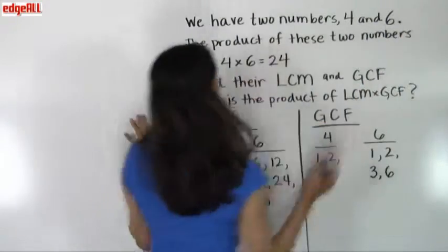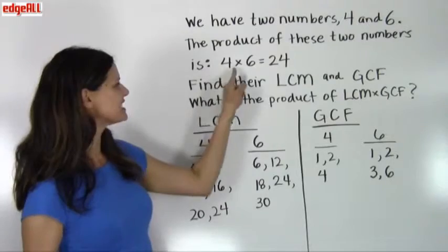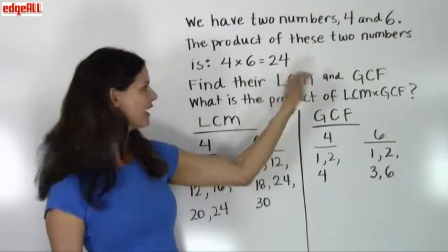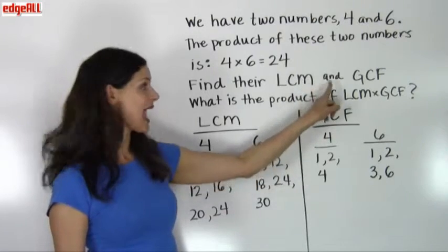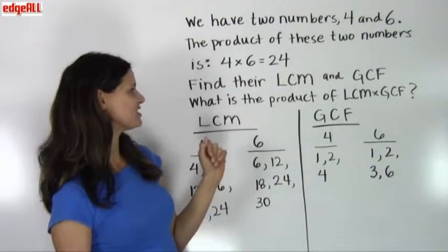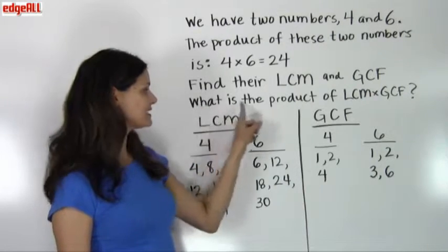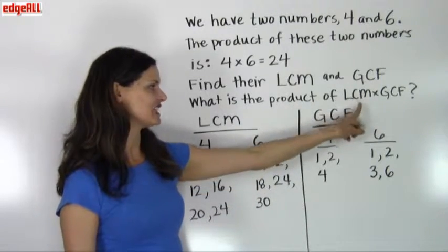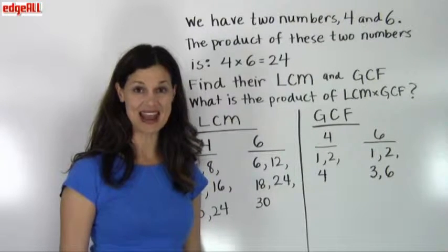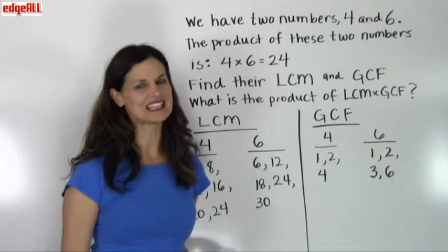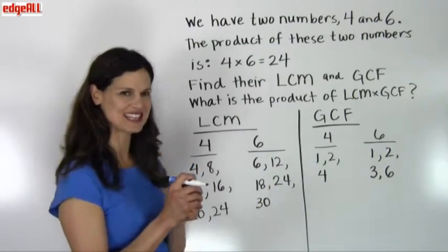We have two numbers, 4 and 6. The product of these two numbers is 4 times 6 equals 24. Find their least common multiple and greatest common factor, and the question for us is: what is the product of the least common multiple times the greatest common factor? Let's see what happens when we find the least common multiple and the greatest common factor and we multiply those two numbers together.